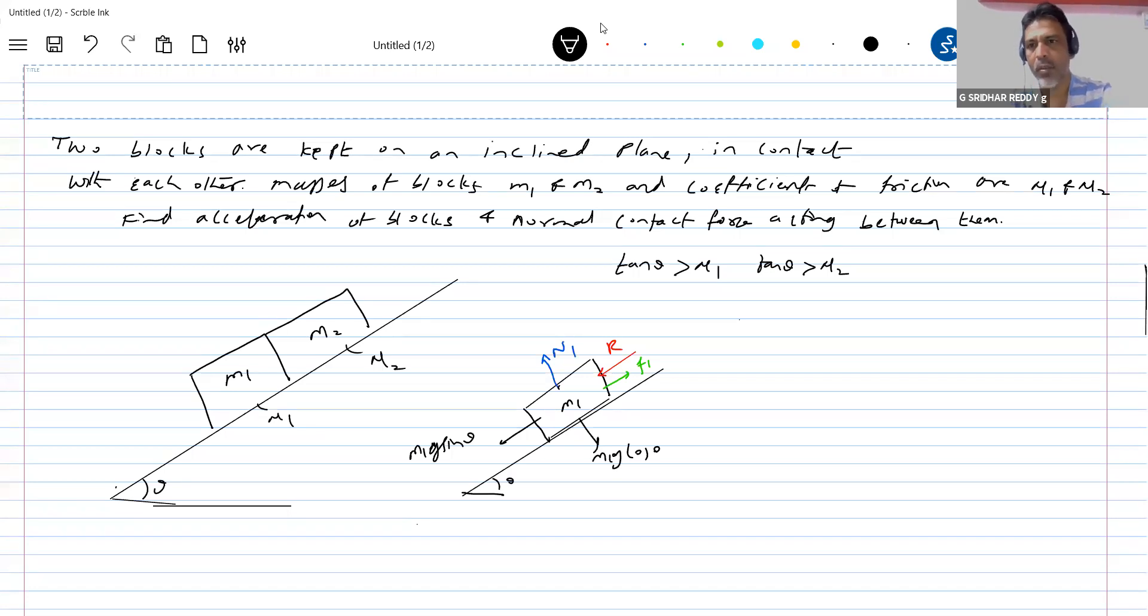Similarly on the other block, M2g sin theta. Now what about the normal reaction between the blocks? The R should act in this direction. The friction on that, F2 you call it. Then this is N2. This is M2g cos theta.